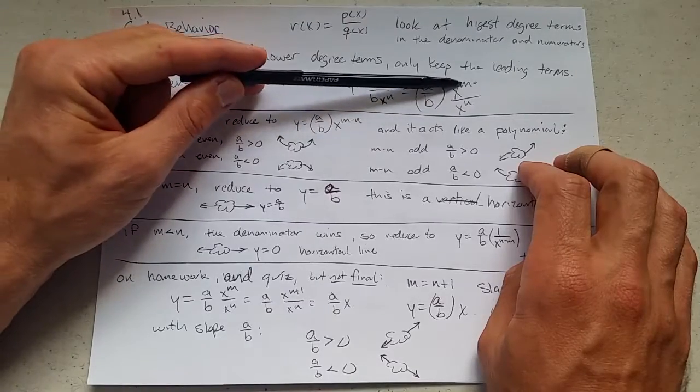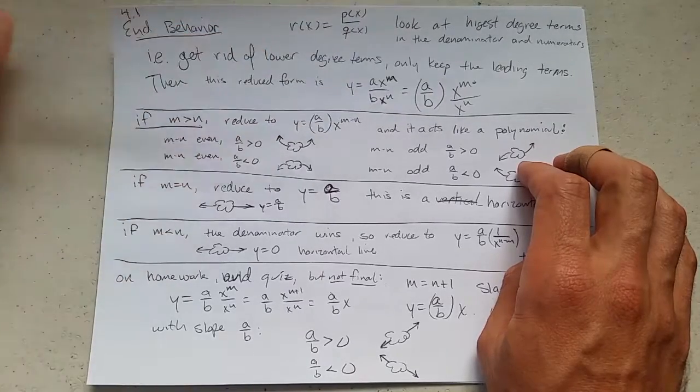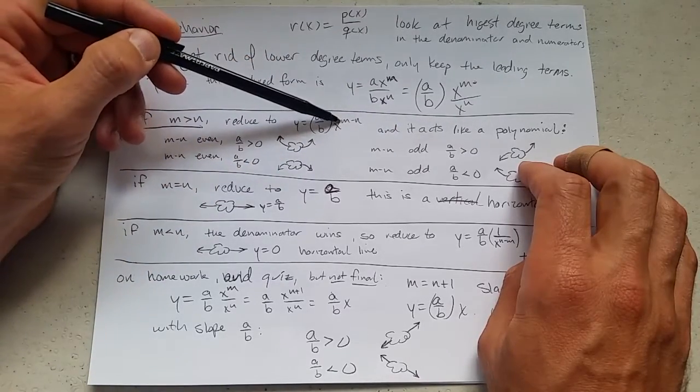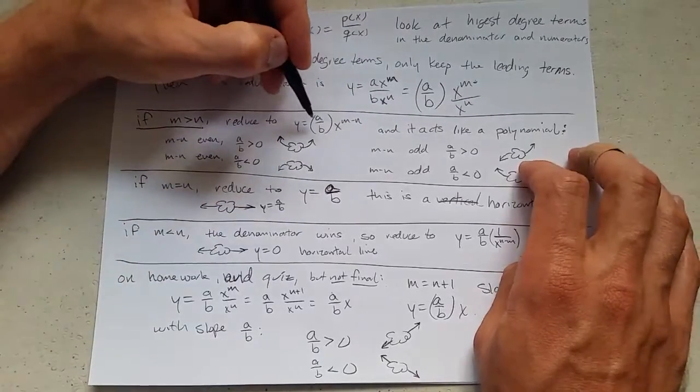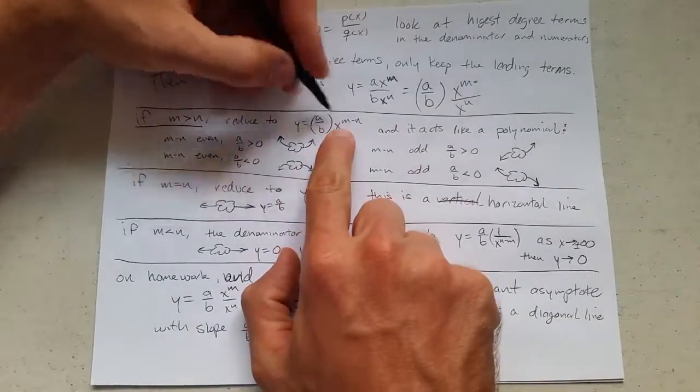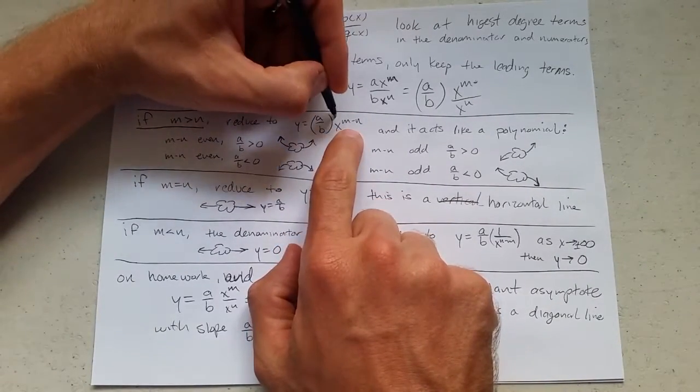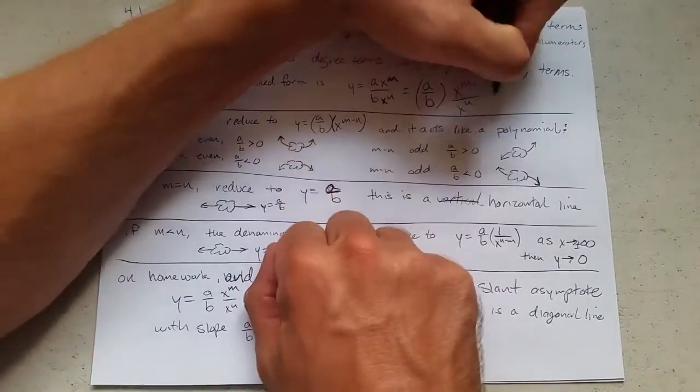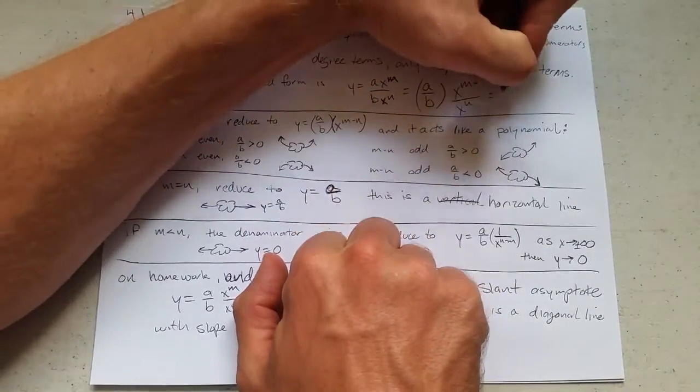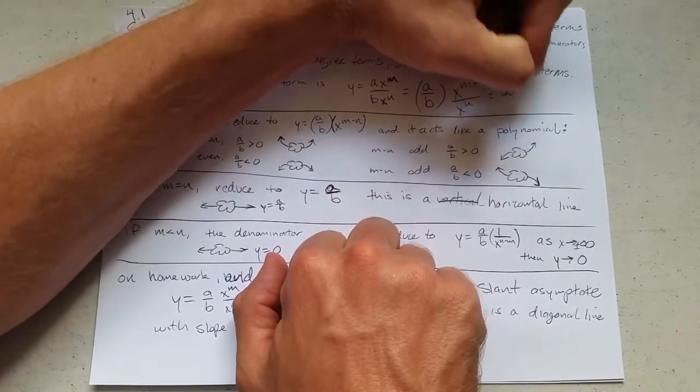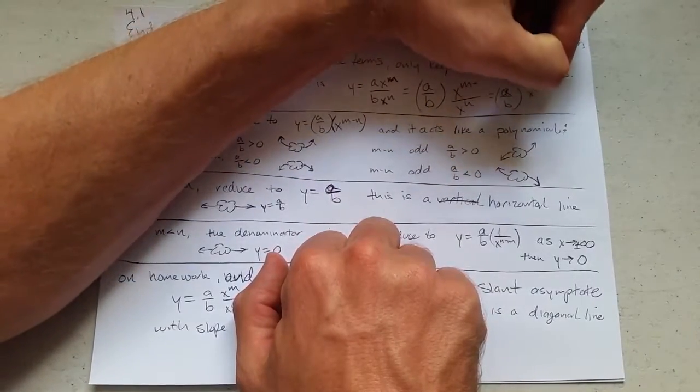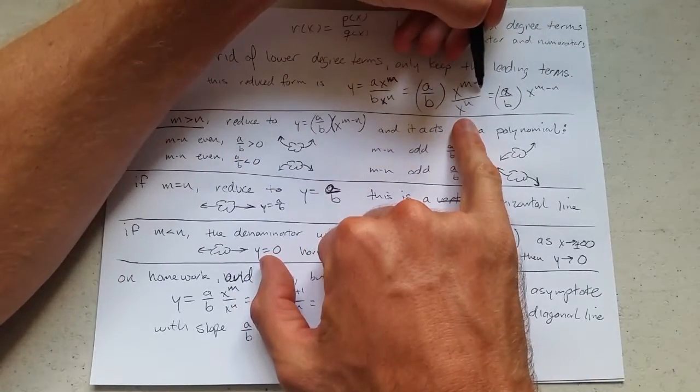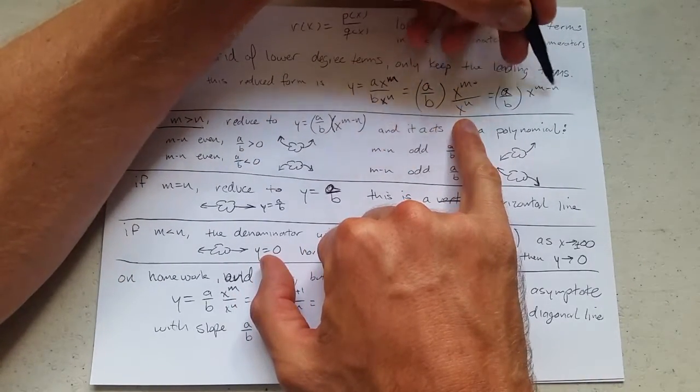We're going to look at what happens if m is bigger. If m is bigger, that means if I subtracted m and n, I'd have a positive number. So I could reduce this to a divided by b, times, it looks like this is written in the denominator, but it is not. This is times x to the m minus n. And how did I do that little bit of algebra? So you bring over your a, divide it by b, and when you bring this term to the top, you subtract powers.